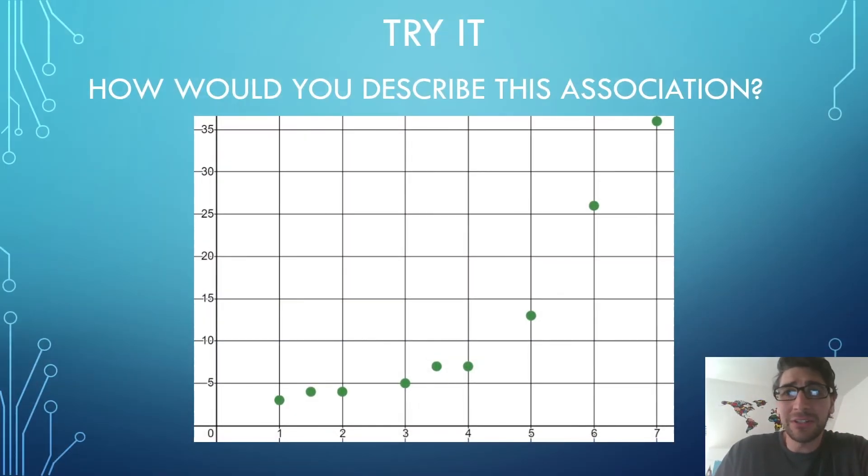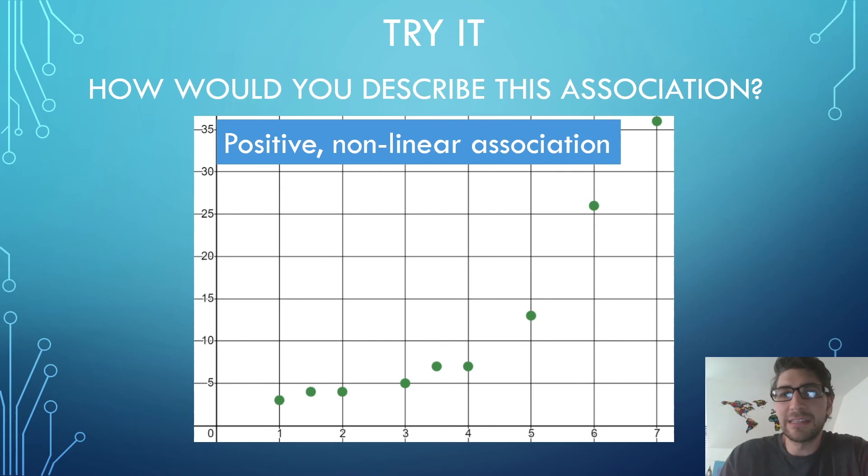Now it's your turn. Try it out. How would you describe this association? The words that we've been using so far today have been positive, zero, or negative association, and also describing it as linear or non-linear. If you said that this is a positive, non-linear association, you are well on your way to this week's objective.